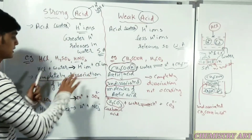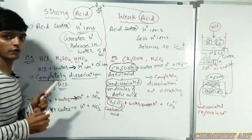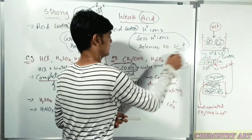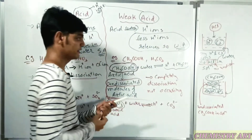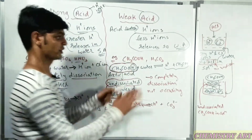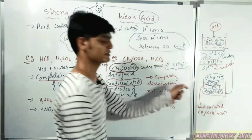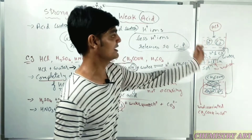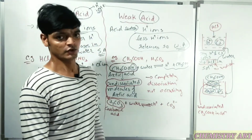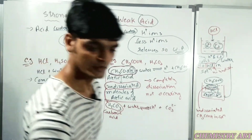So I hope you now understand why it is called a strong acid and why a weak acid. In strong acids, complete dissociation is occurring, so the number of H+ ions is greater. In weak acids, the ions formed by dissociation are again converting into the same acid, so undissociated molecules remain in the solution. No undissociated HCl is present in the strong acid solution - only H+ and Cl- ions.